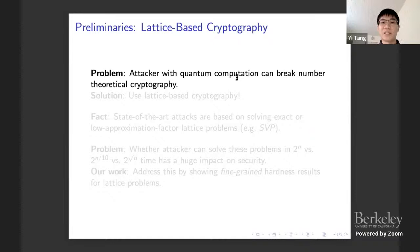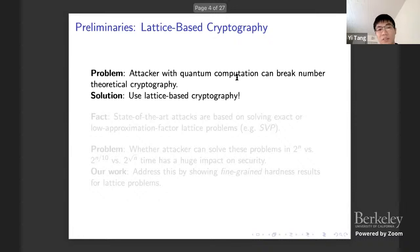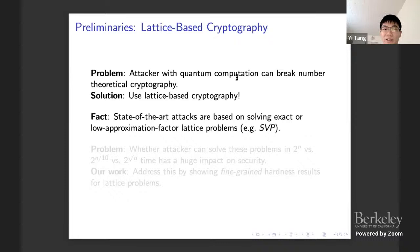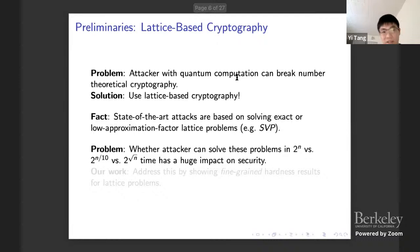The study of lattices is motivated by lattice-based cryptography. We are approaching more practical quantum computations, and attackers with quantum computers can break traditional cryptography based on number theory. One solution is lattice-based cryptography, because people believe lattice problems are hard to solve even with quantum. Currently, state-of-the-art attacks on lattice-based cryptosystems are based on solving exact or low-approximation-factor versions of lattice problems such as SVP. Whether the attacker can solve these problems in 2^n, 2^(n/10), or 2^(sqrt(n)) time has a huge impact on the security of the cryptosystem.